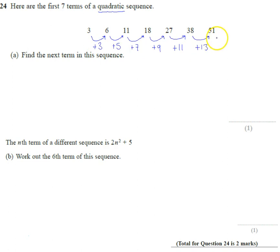We're asked to find the next term, so we're going to have to add on fifteen to get to the next term here. So all I have to do is fifty-one plus the fifteen and that makes sixty-six. So that's going to be the next term, sixty-six.